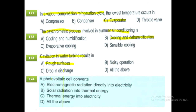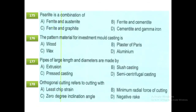A photovoltaic cell converts electromagnetic radiation directly into electricity. Pearlite is a combination of ferrite and cementite. The pattern material for investment mold casting is wax.